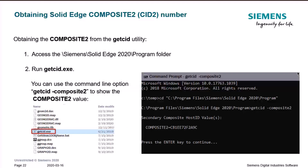Finally, you can access the same information using the getcid.exe executable, which is in the program folder under your Solid Edge installation. You just run it and it will give you the Composite 2 value. You can also run it in a DOS window via command line — very flexible options.